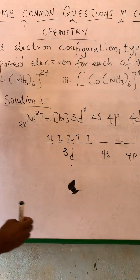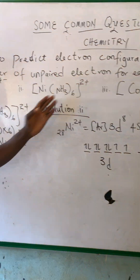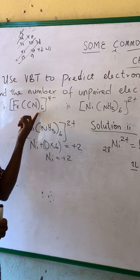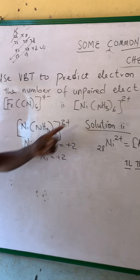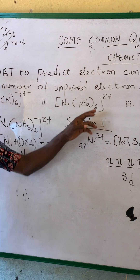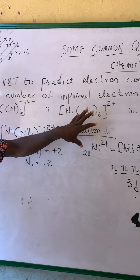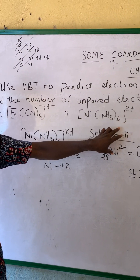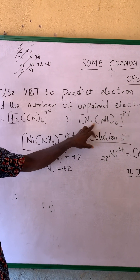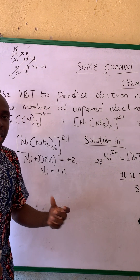These are the complexes that we have done for the first one. Now the second one — the IUPAC name is called hexaamine-nickel(II).